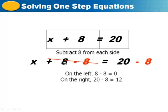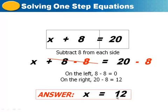Okay, so once we subtract 8 from both sides, on our left side, 8 minus 8 equals 0. And on our right side, 20 minus 8 equals 12. So that leaves us with x equals 12.